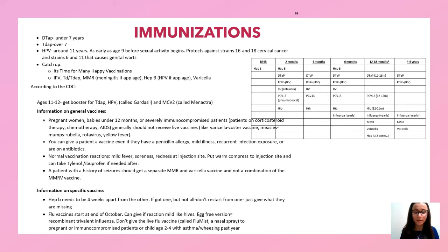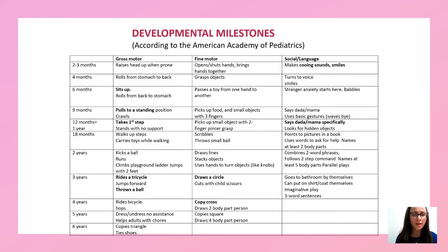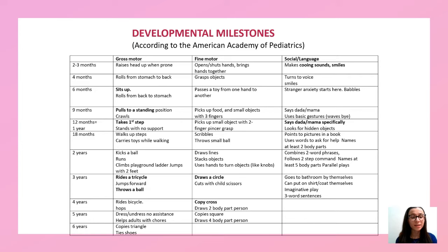Avoid vaccines if Guillain-Barré syndrome occurred within six weeks of vaccination; don't give aspirin within four weeks of vaccination. Key developmental milestones: 2-3 months — cooing and smiling; 6 months — sitting up; 9 months — pulling to stand; 12 months — first steps, says mama/dada; 3 years — rides tricycle, draws a circle, throws a ball; 4 years — draws a cross.